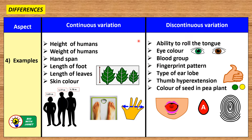Examples of continuous variation are the height of humans, weight of humans, hand span, the distance between the thumb and the last finger, length of foot, and length of leaves in plants of the same species. Examples of discontinuous variation are ability to roll the tongue, eye colour, blood group, fingerprint pattern, type of earlobe (free or attached), thumb hyperextension, whether the thumb bends backwards or stays straight, and colour of seed in pea plant — whether green or yellow.